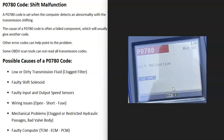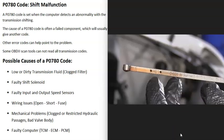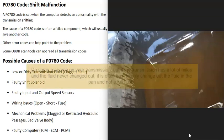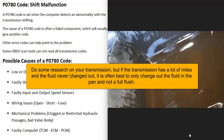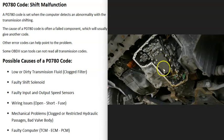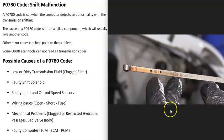The first possible cause of a P0780 code is low or dirty transmission fluid, or a clogged transmission filter. If you can, go check your transmission fluid and make sure it's not low or really dirty. Many vehicles nowadays no longer have a dipstick, but if you can check it, do so. If the fluid looks dirty, it might be a good idea to have the transmission fluid and filter changed, especially if it's overdue on the maintenance schedule.